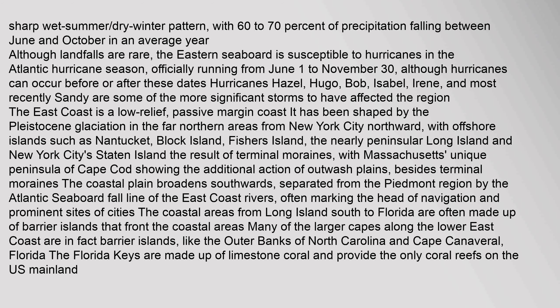The east coast is a low-relief, passive margin coast. It has been shaped by Pleistocene glaciation in the far northern areas from New York City northward, with offshore islands such as Nantucket, Block Island, Fishers Island, the nearly peninsular Long Island, and New York City's Staten Island — the result of terminal moraines — with Massachusetts' unique peninsula of Cape Cod showing the additional action of outwash plains besides terminal moraines.